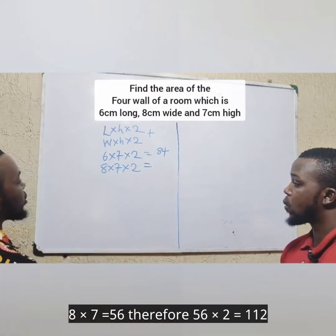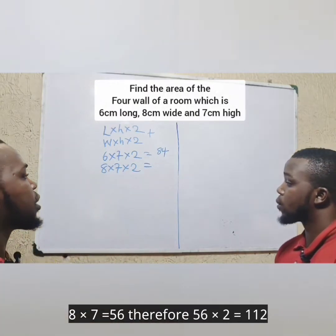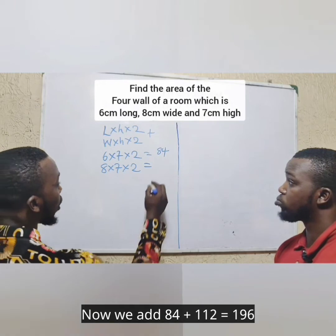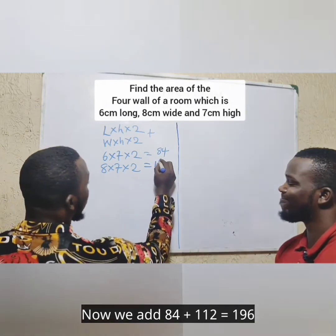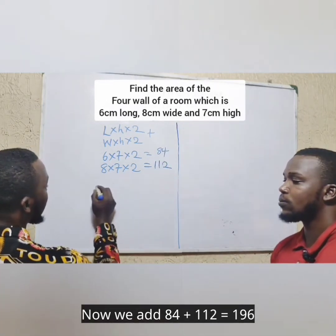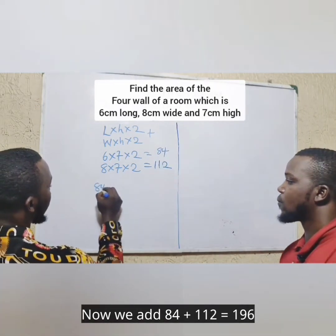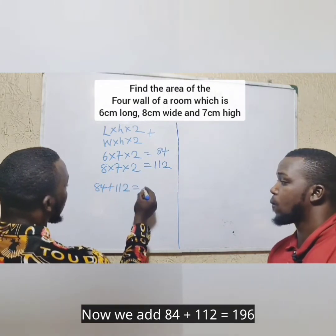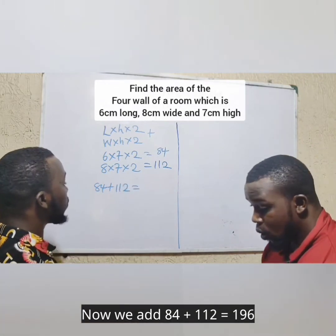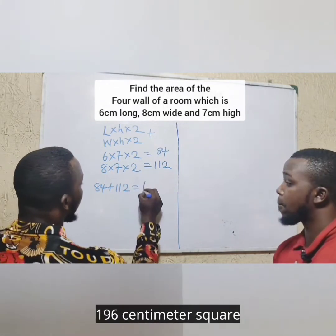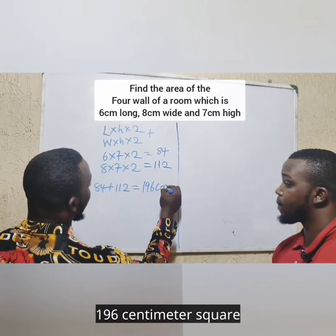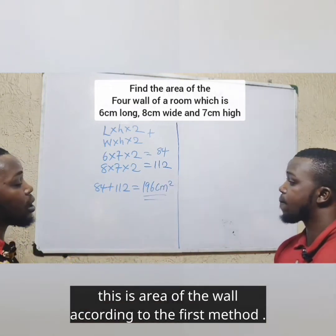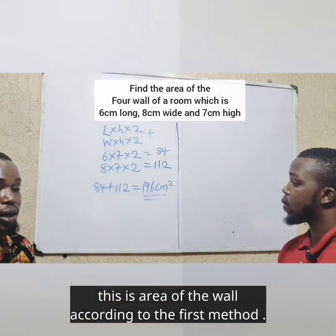Eight times seven gives you 56, times two gives you 112. Now we add 84 plus 112, which gives you 196 centimeters squared. This is the area of the four walls according to the first method.